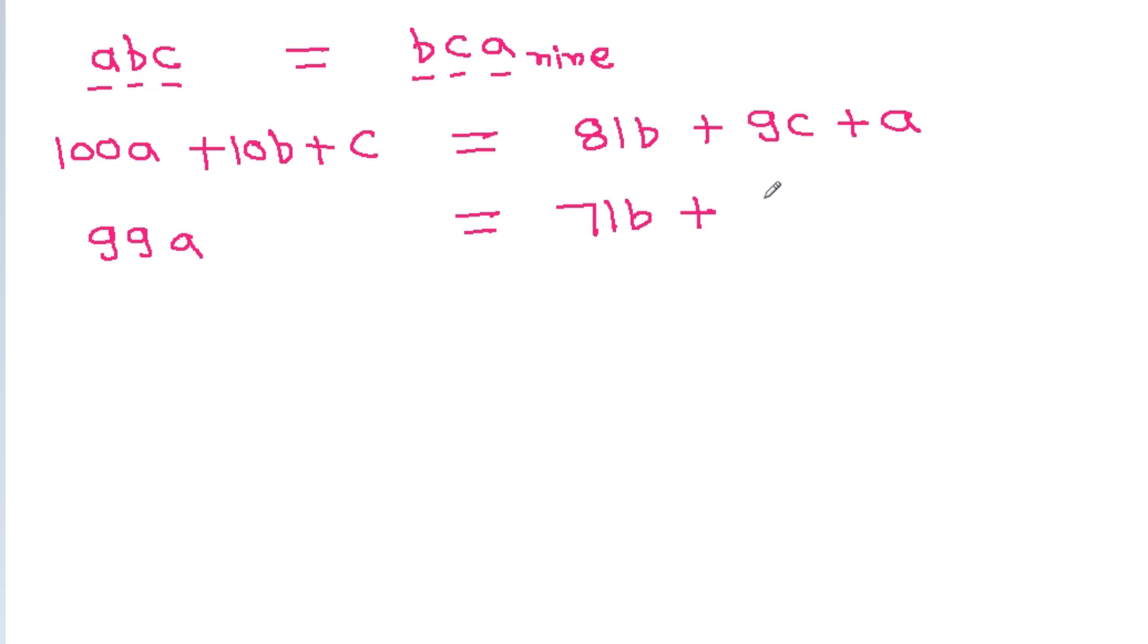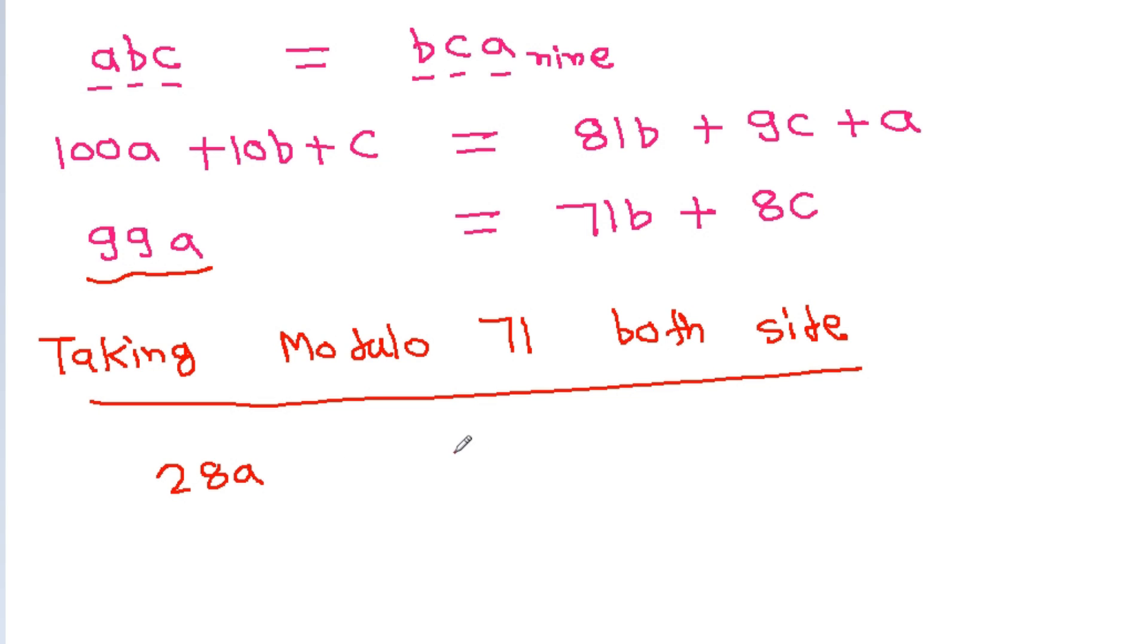If we take modulo 71 on both sides, then 99a mod 71 will be 28a, which is congruent to 71b mod 71, which is 0, plus 8c mod 71, which is 8c. If we divide by 4, we get 7a is congruent to 2c.